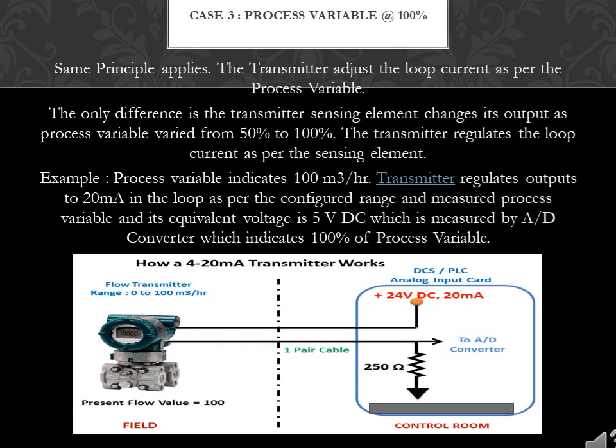Case 3: process variable at 100%. The same principle applies. The transmitter adjusts the loop current as per the process variable. The only difference is the transmitter sensing element changes its output as the process variable varies from 50% to 100%. The transmitter regulates the loop current as per the sensing element. Example: process variable indicates 100 m³/hr. The transmitter regulates output to 20mA in the loop as per the configured range and measured process variable, and its equivalent voltage is 5VDC, which is measured by the A/D converter and indicates 100% of process variable.